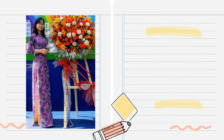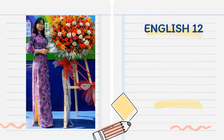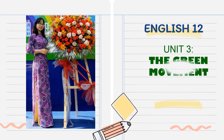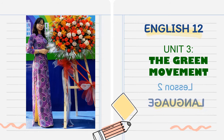Hi, everyone. My name is Thu Le An Thu. I am a teacher at Pedagogical Practice School. Welcome to English 12, Unit 3, The Green Movement, Lesson No. 2, Language.